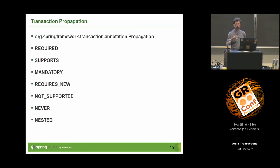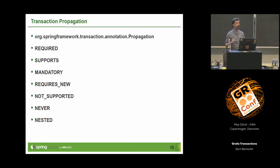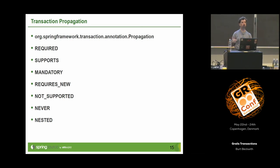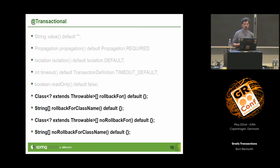The default — whether you use @Transactional or just have a transactional service — is 'required': every method will start a transaction if there isn't one running. If it started the transaction for that method, it will commit at the end or roll back if it failed. But if a transaction was already running and it joined that one, it won't commit — whoever started the outer transaction has the responsibility of committing it.